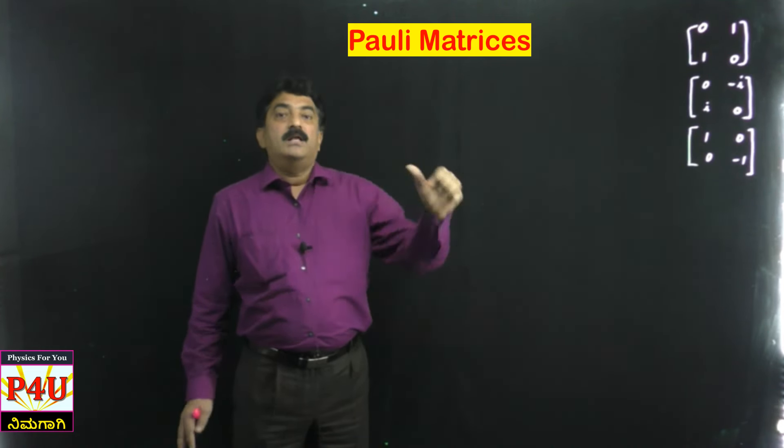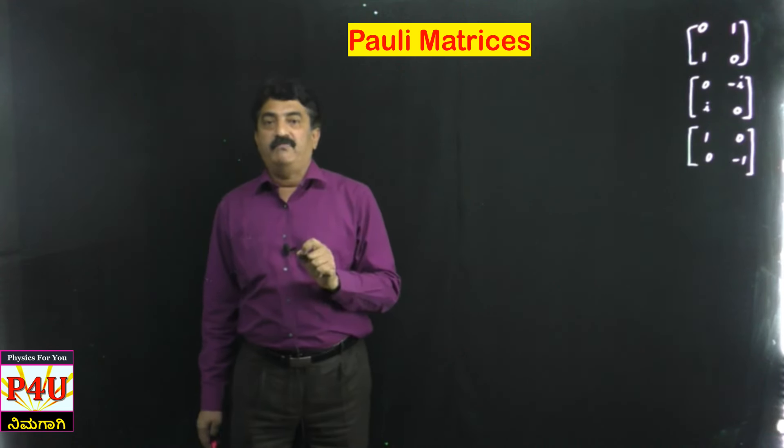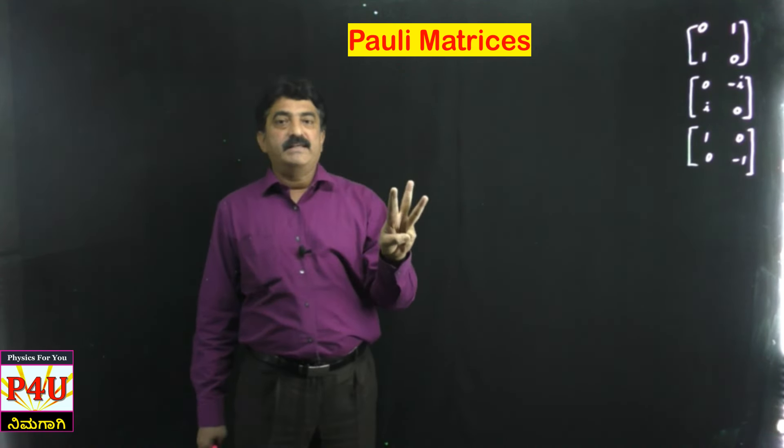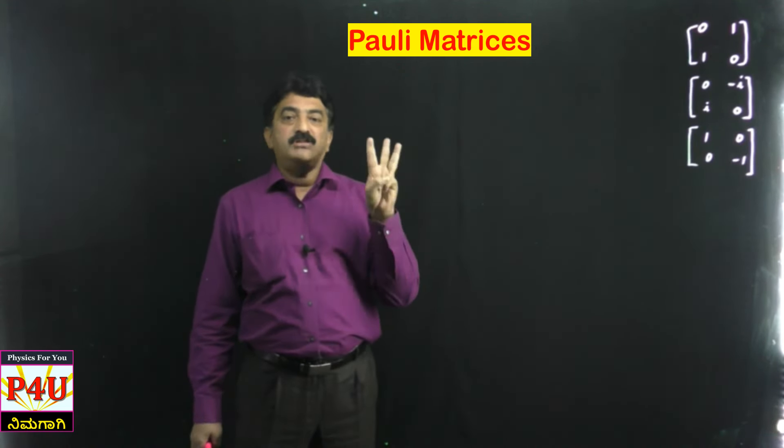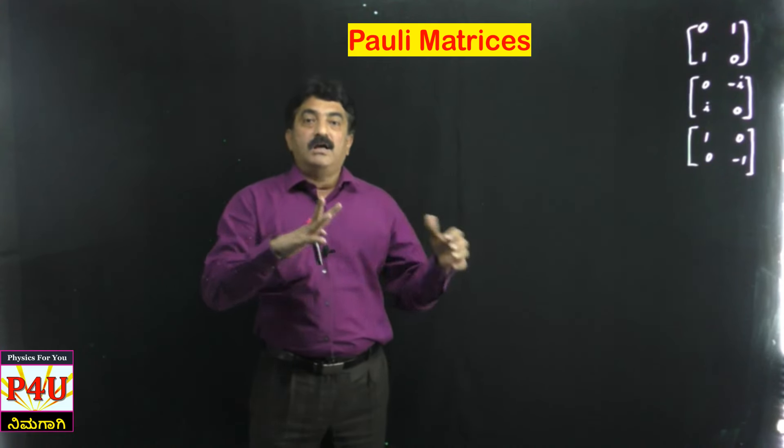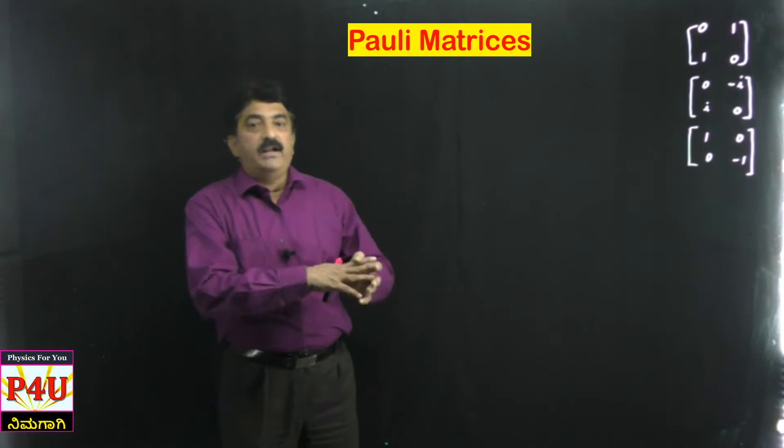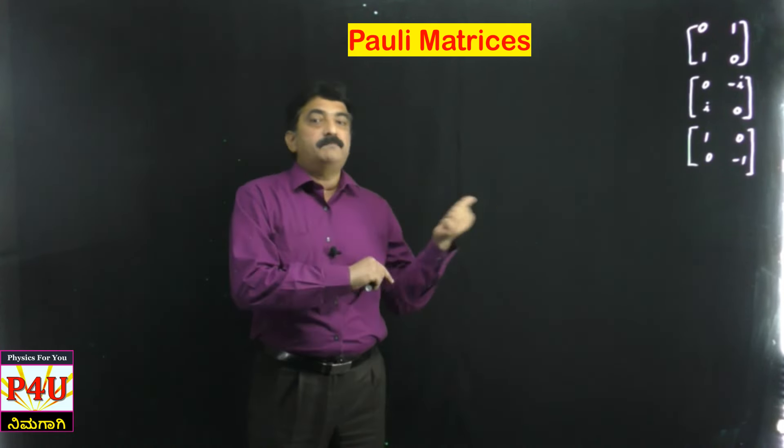So even here also, if you can change the spin state of the electron with some support - in this case it is magnetic field support - we can do some operations. So Pauli, in order to explain the variation in the spin state due to external magnetic field, introduced three matrices which are now called Pauli matrices.